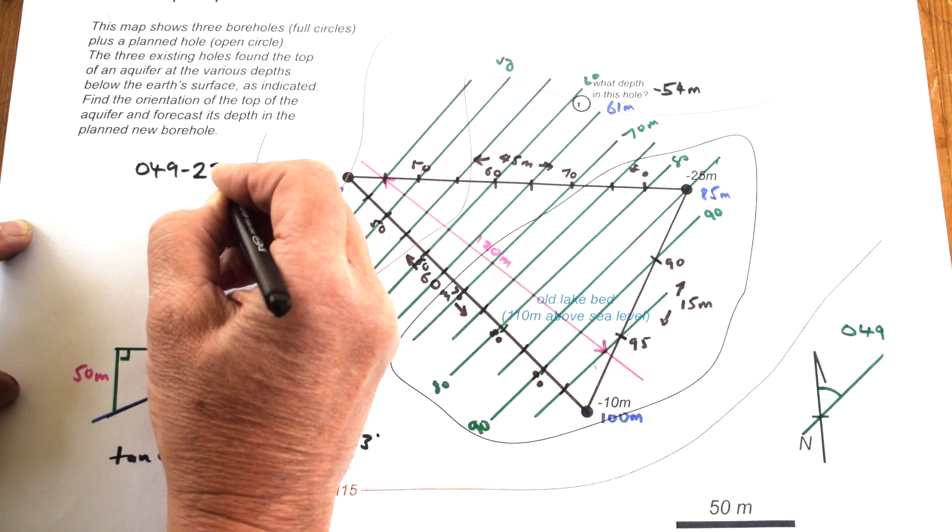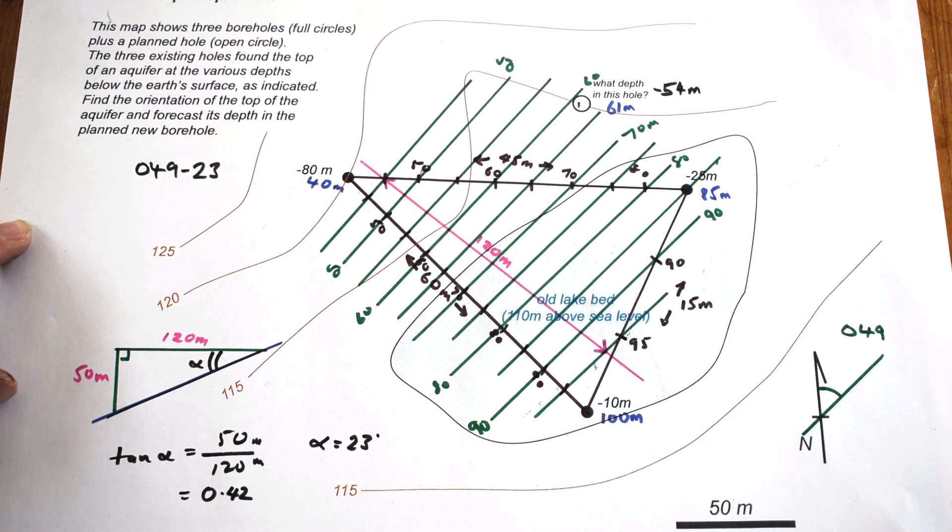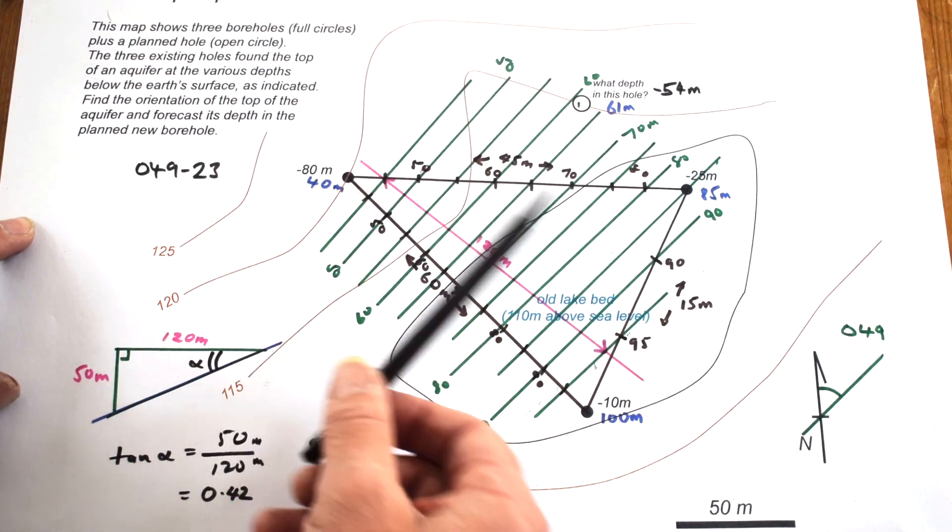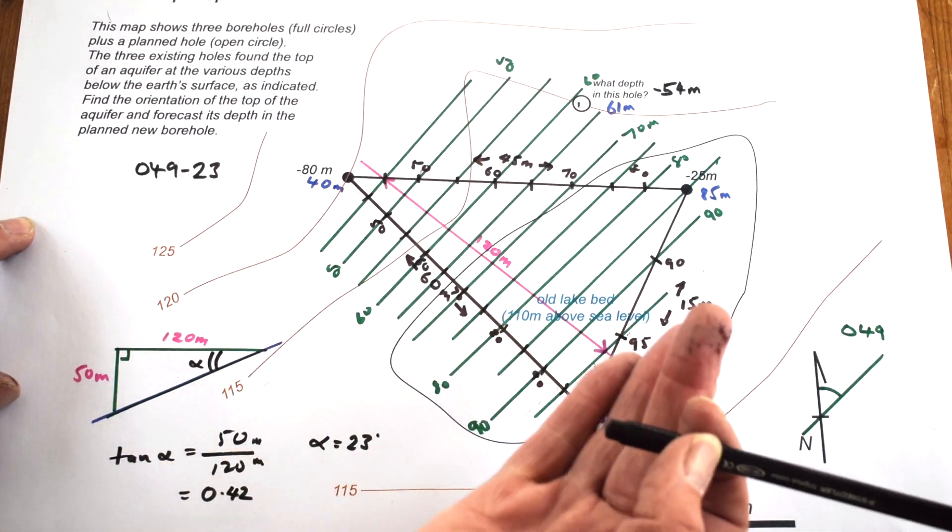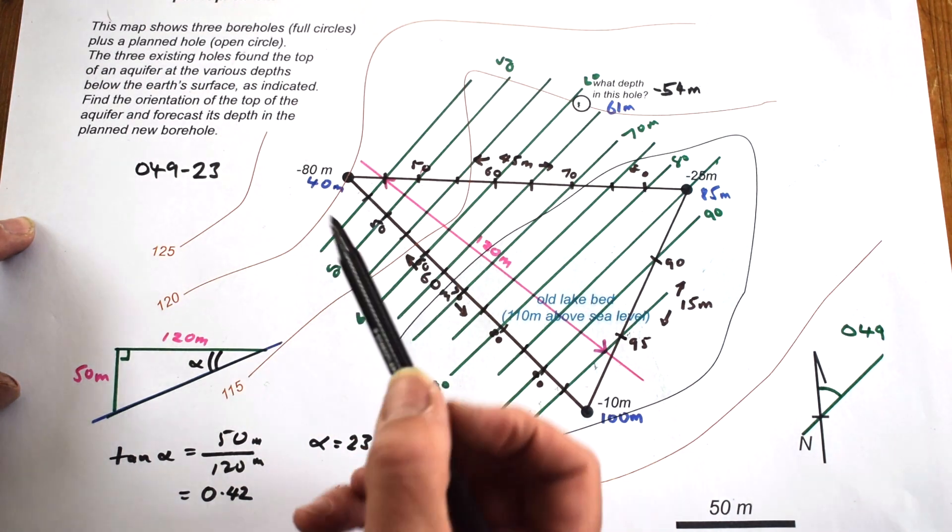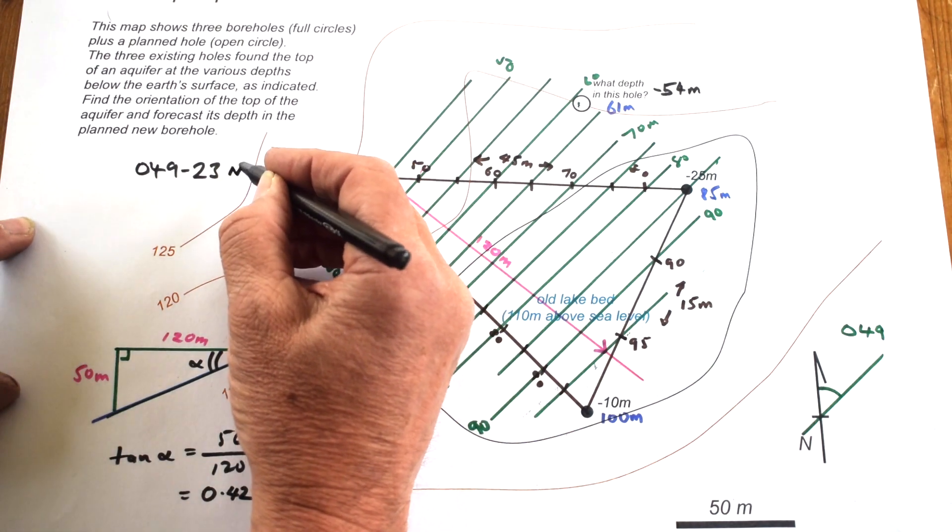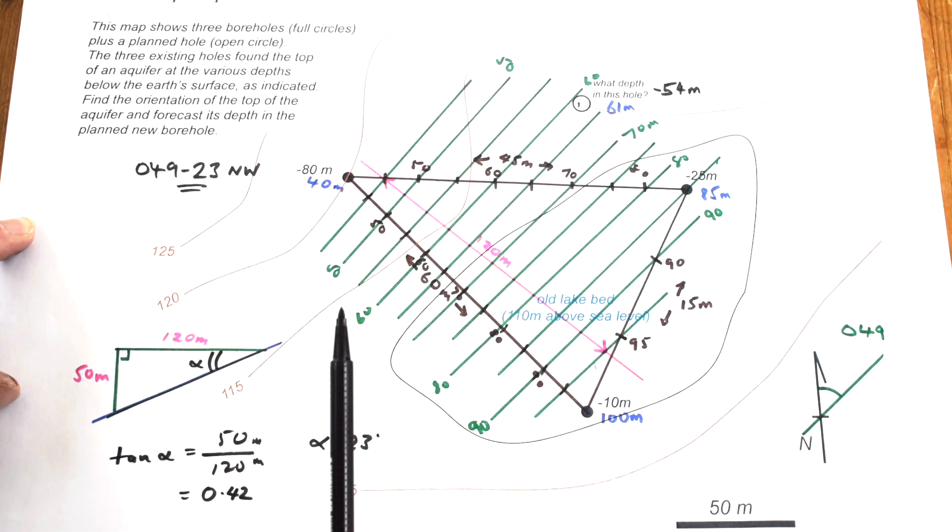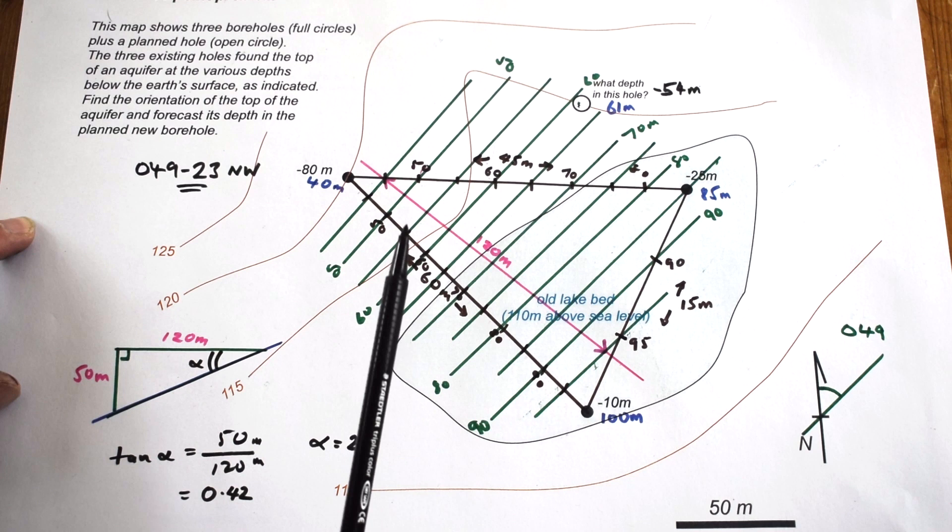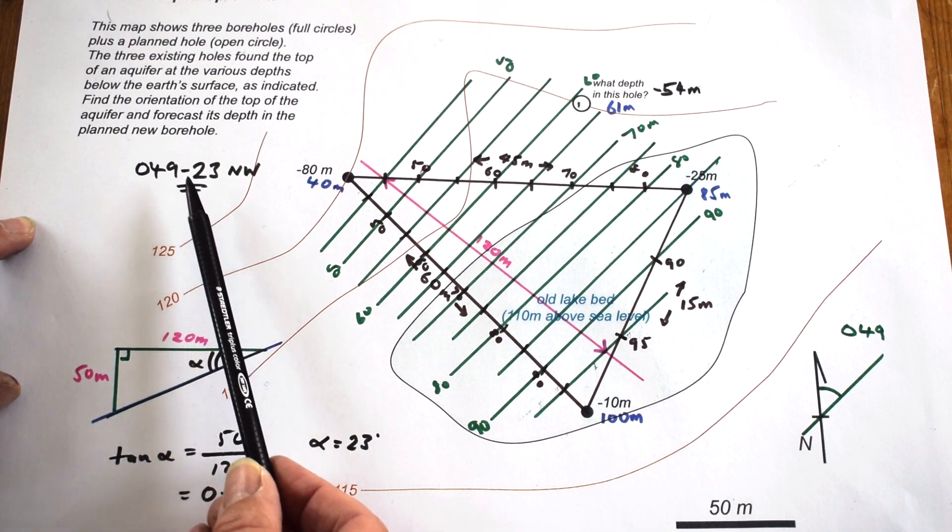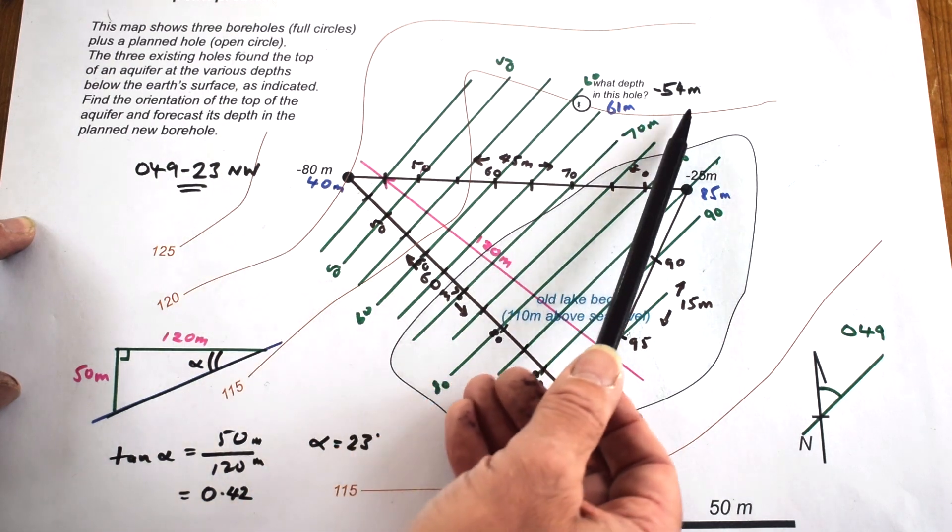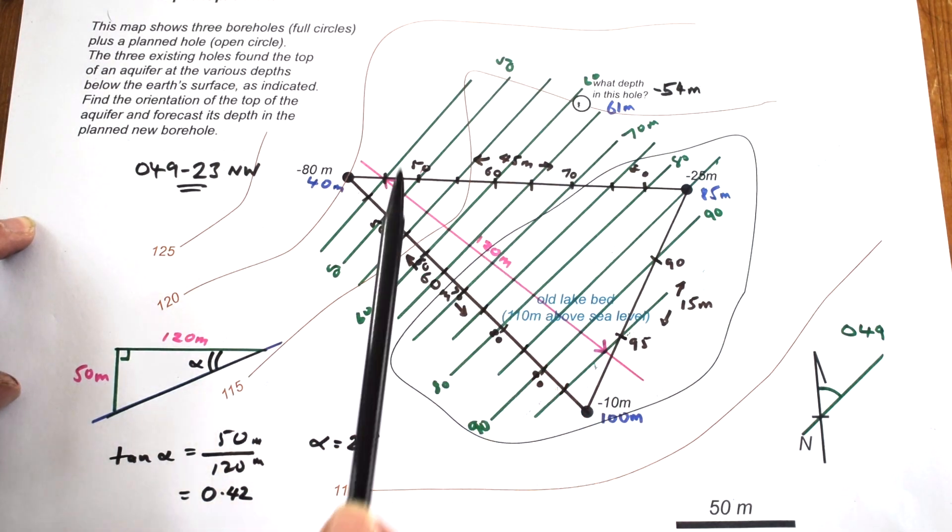Now we just need to think about which way it's dipping. Here at this end we've got structure contours of 90 meters, here we've got 50, so this is higher than this. It's dipping this way towards the northwest. That is our orientation of the top of the aquifer. We've calculated the dip and strike, its dip direction approximately, and we've calculated the depth in the borehole.